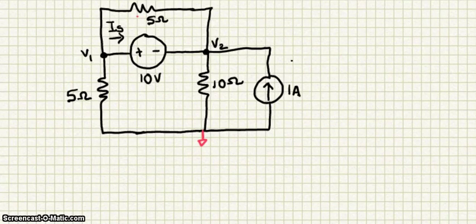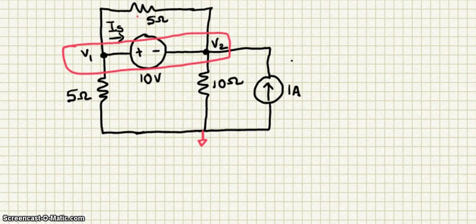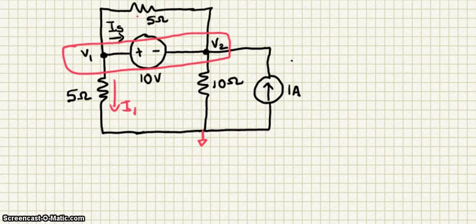That makes this node right here a supernode. Just like a regular node, for a supernode, KCL — Kirchhoff's Current Law — still holds. So any current coming into the supernode must equal the current coming out of the supernode.